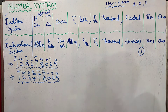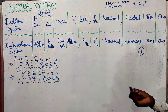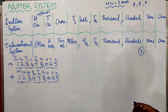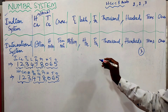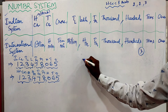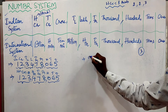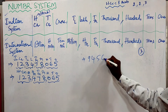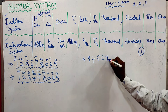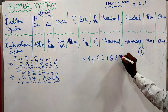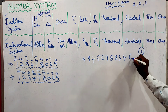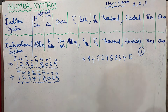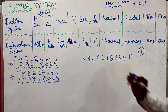Now we will consider a 10-digit number and try to read it in the Indian and international system of numeration. The number we are considering is 9, 4, 5, 6, 7, 8, 2, 3, 4, 0 — that is the 10-digit number 9,456,782,340.